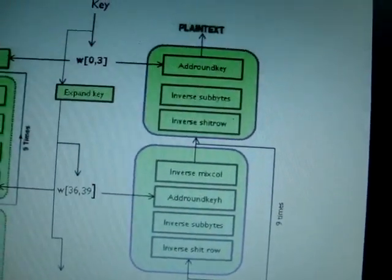So here inverse ShiftRows, inverse SubBytes, AddRoundKey, and last will be the inverse MixColumns in the decryption block. The last operation will be avoiding the MixColumns and we will get our plaintext.